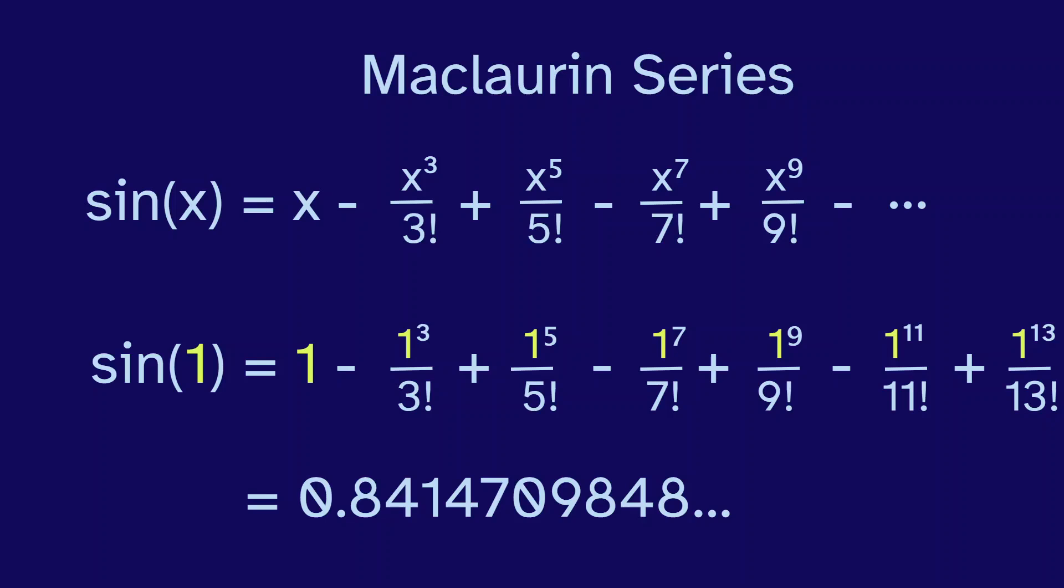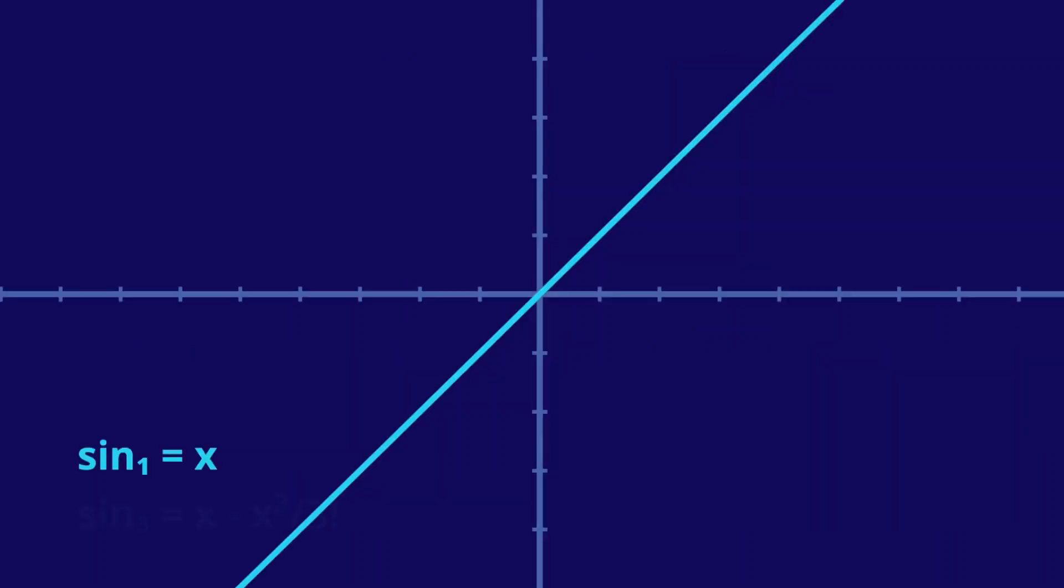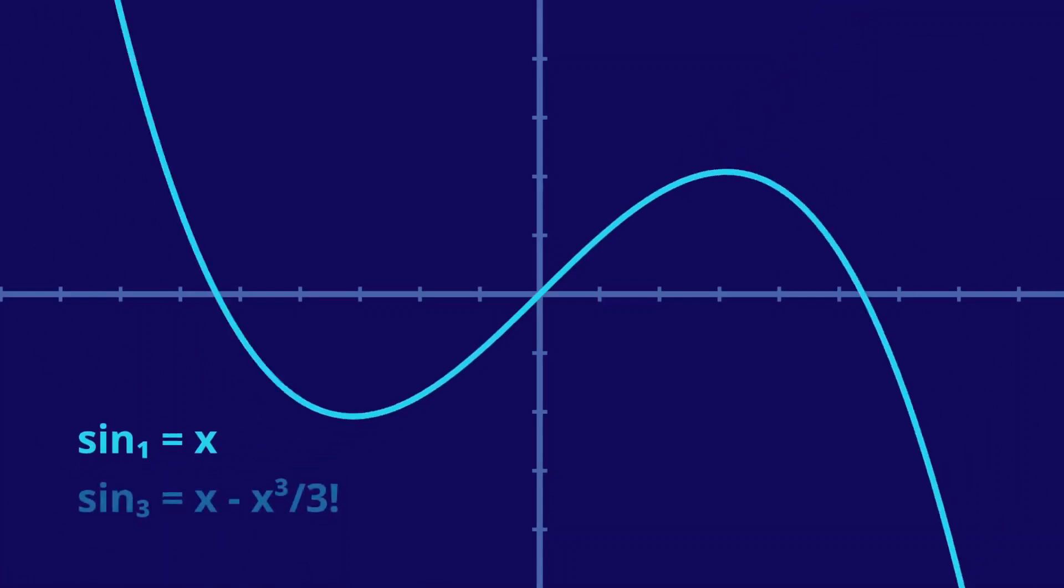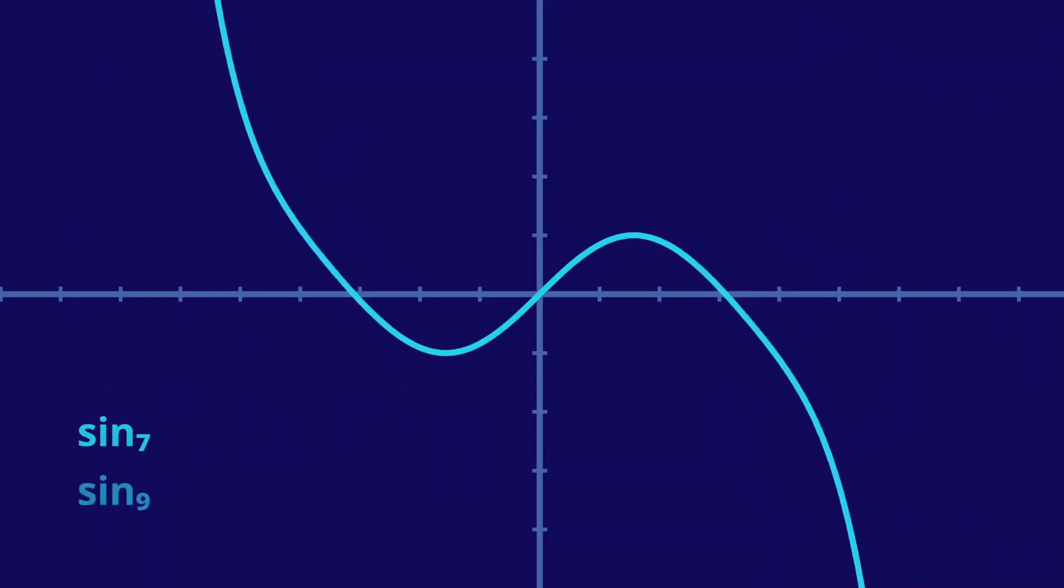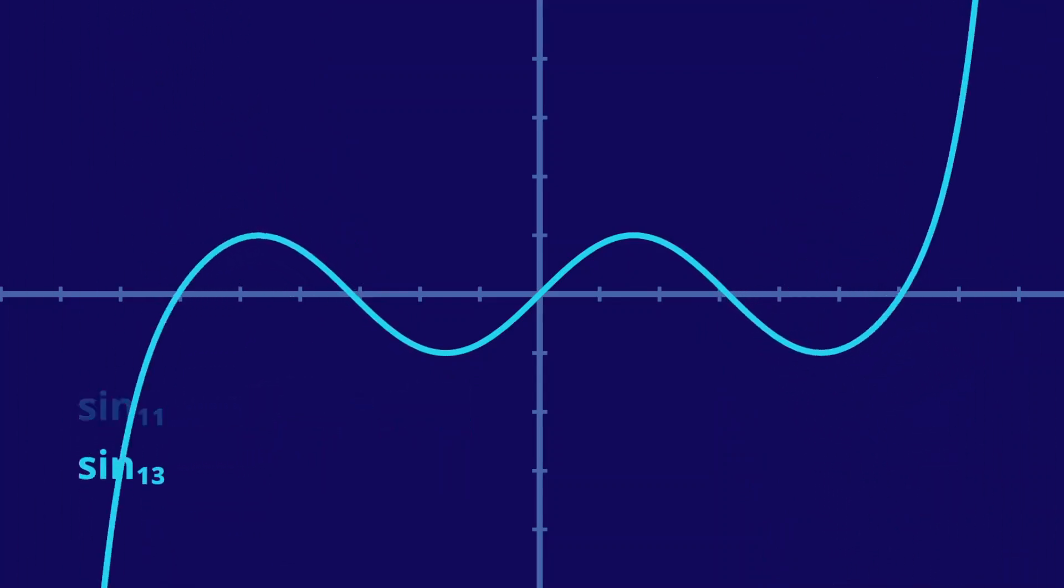And we can use this Maclaurin series to graph sine. We'll start with just x, then add the third power term, then the fifth power term, and continue until we get that sine wave.